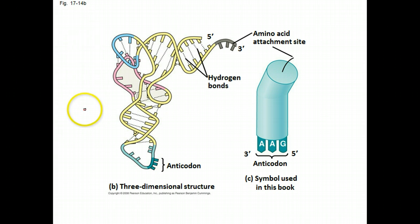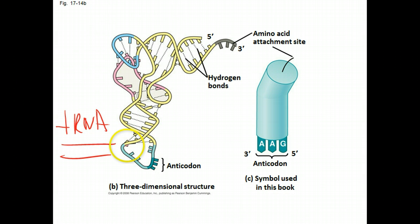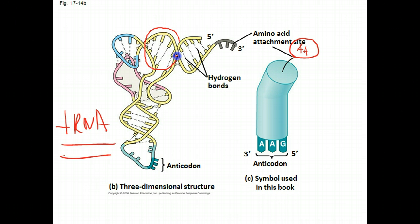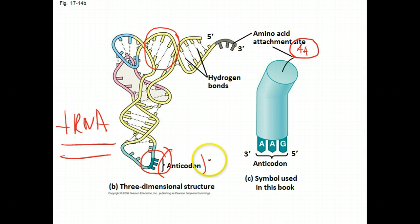The information in this messenger RNA is going to be translated into a series of amino acids. The RNA that participates in this is the transfer RNA. The transfer part refers to the fact that it's transferring amino acids — these tRNAs transport amino acids from the cytoplasm to the ribosome in a sequence-specific manner. At the very bottom of the tRNA molecule is the anticodon.